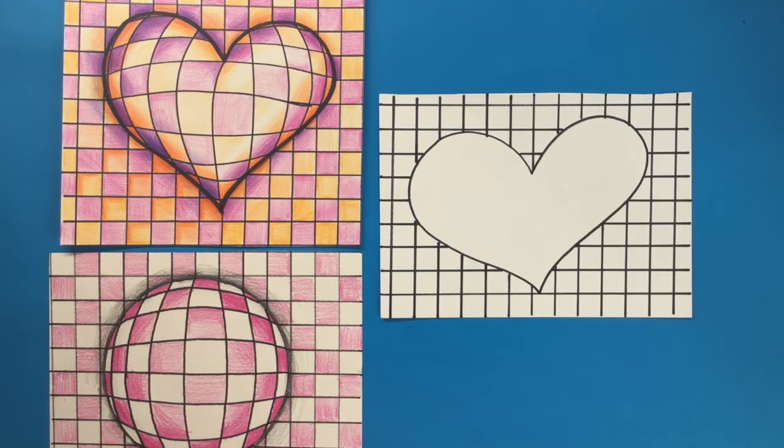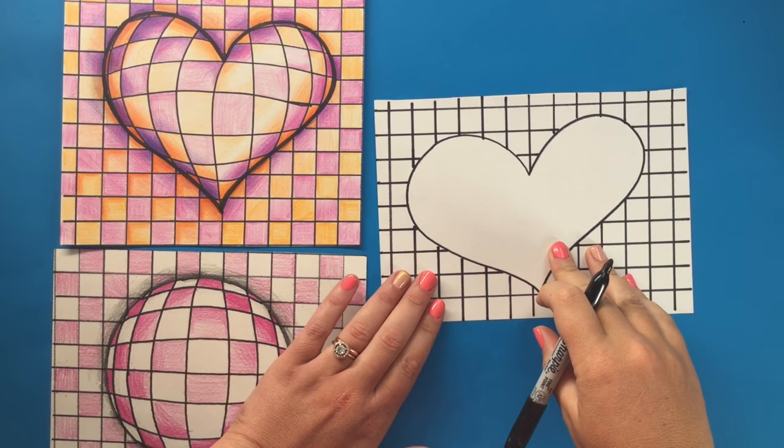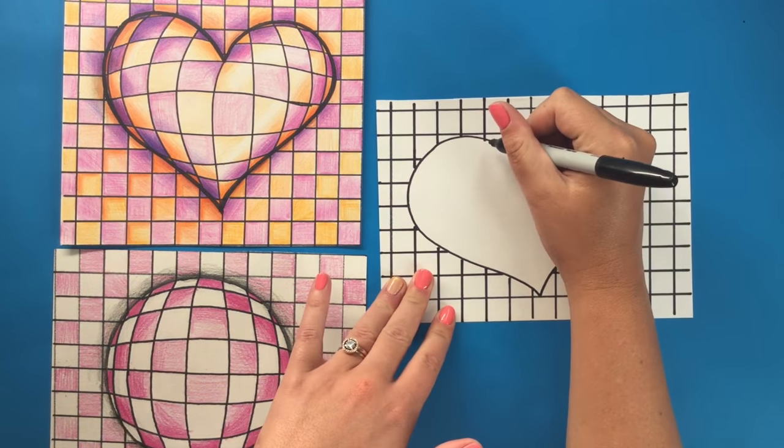Once we have finished the whole background grid, the next thing that we need to be working on is adding the curved lines for the 3D shape. And the way that I go about doing this is I am going to find one of the lines from the grid and I am going to curve it to the other side.